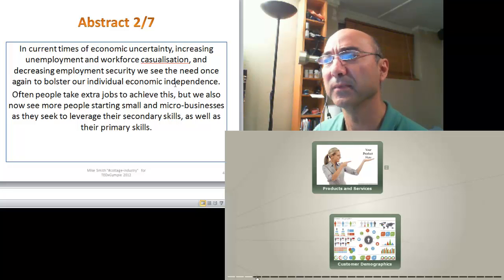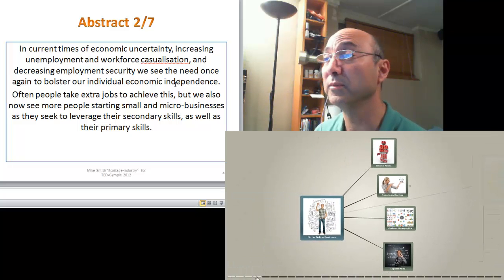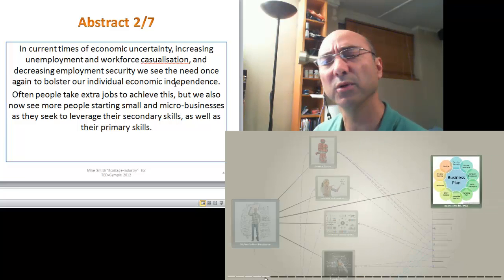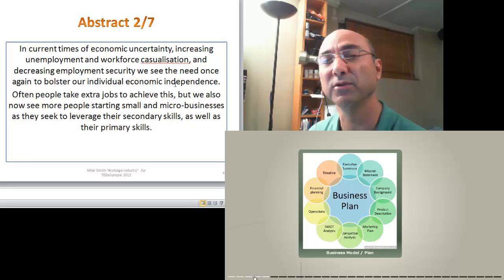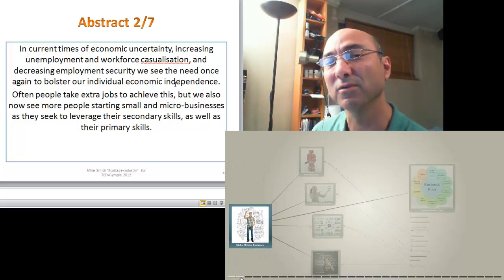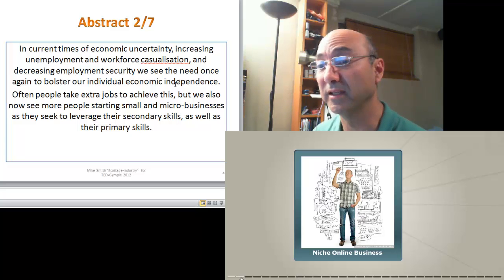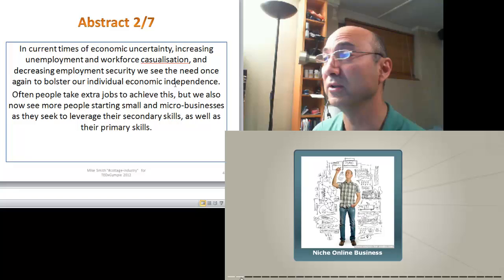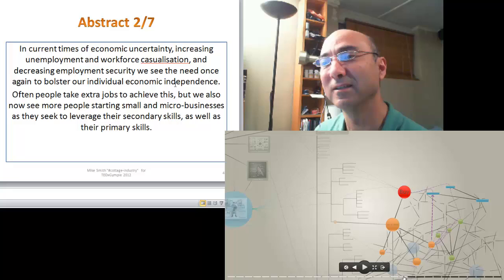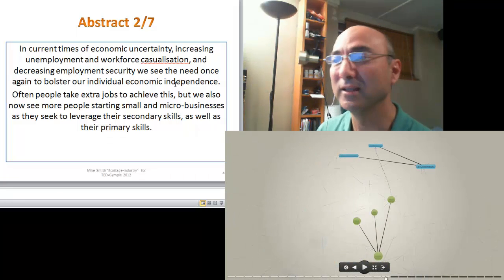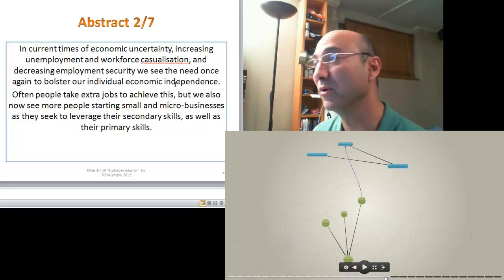So we have increased unemployment at the moment and also increased workforce casualisation, using casual contracts and work arrangements rather than permanent contracts. And that's actually an increasing trend over a long period of time. And so people have decreased employment security, and again, we have the need to bolster our own independence from our primary employer.